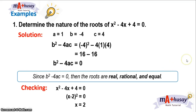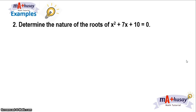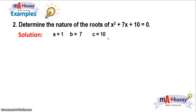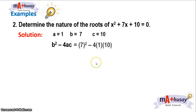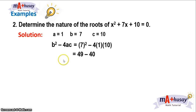Let's take example number two. Determine the nature of the roots of x² + 7x + 10 = 0. We identify the values of a, b, and c, which are 1, 7, and 10 respectively. Substituting into the discriminant b² − 4ac, we have 7² − 4(1)(10). We know that 7² = 49, and 4 × 1 × 10 = 40. So 49 − 40 = 9, giving us b² − 4ac = 9.